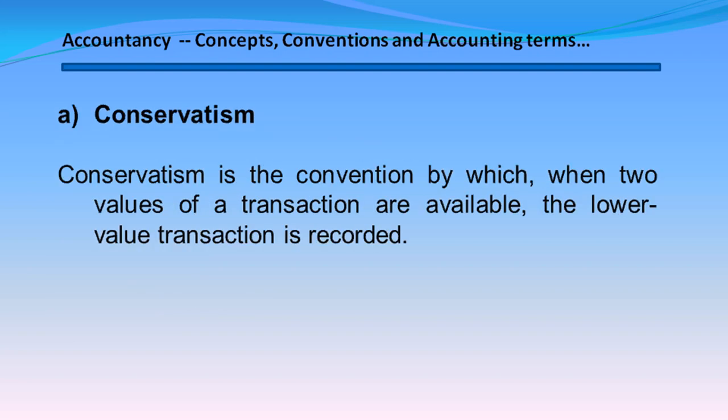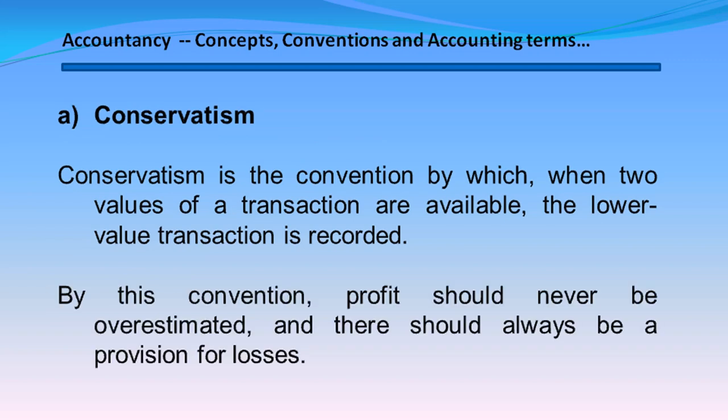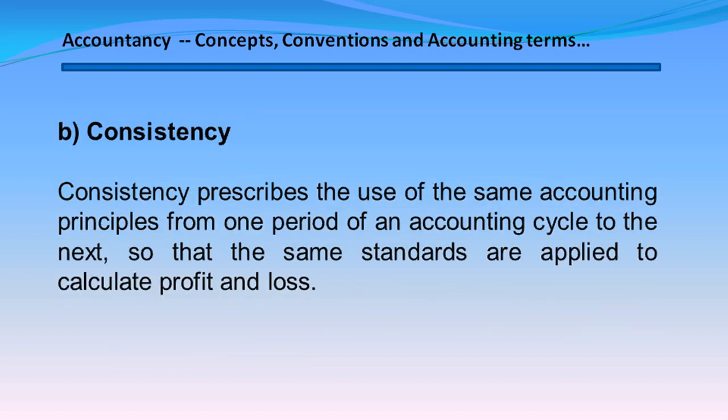Conservatism is the convention by which, when two values of a transaction are available, the lower value transaction is recorded. By this convention, profit should never be overestimated, and there should always be a provision for losses. Consistency prescribes the use of the same accounting principles from one period of an accounting cycle to the next, so that the same standards are applied to calculate profit and loss.